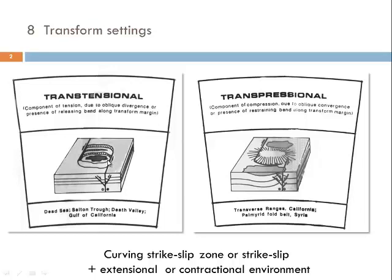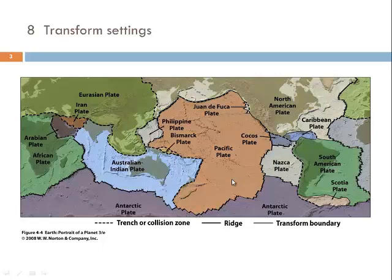Transform settings in the narrow sense are those related to large-scale plate tectonic processes, and most of them are developed along transform boundaries in the oceanic environment where we have the sidestepping of mid-oceanic ridge segments. Two important features are fairly well studied because they are on land: the San Andreas fault in California and the Alpine fault in the South Island of New Zealand. We are going to talk about these two structures in a bit more detail.